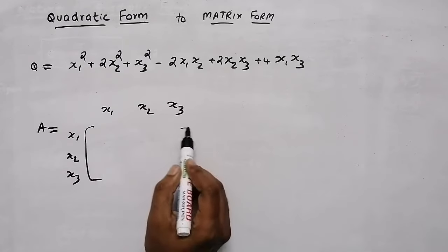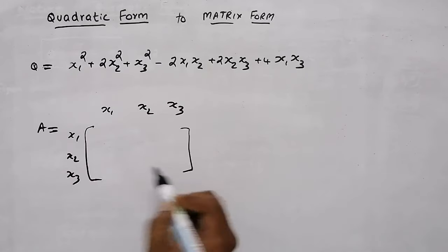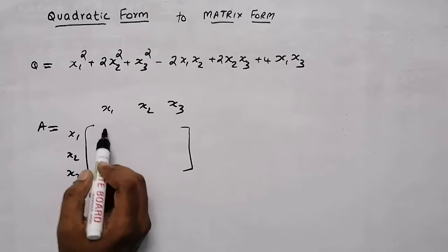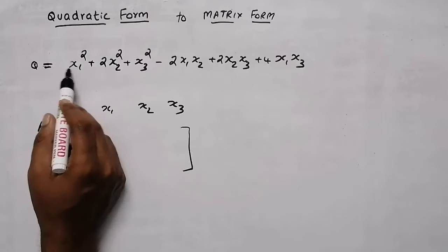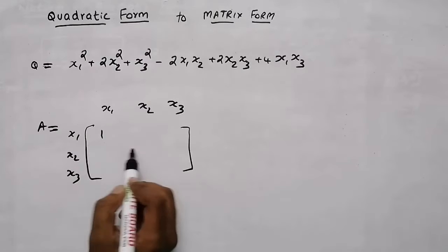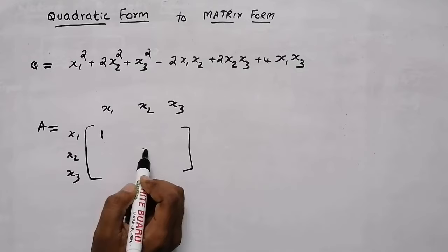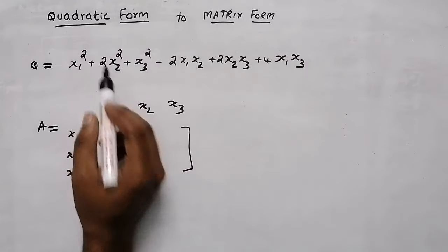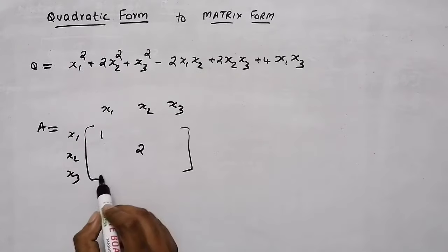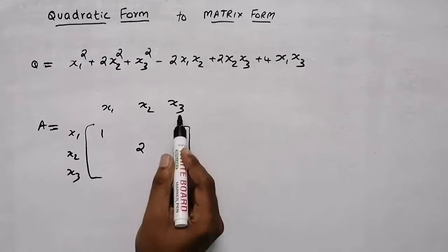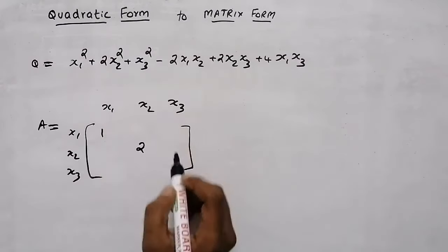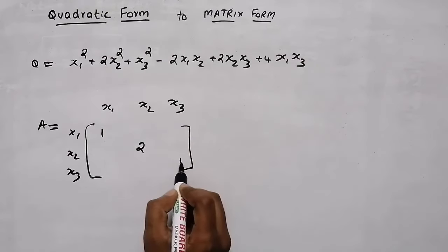First of all, we need to write the diagonal elements. x1 into x1, that is x1 squared — the coefficient of x1 squared is 1. Then x2 into x2, that is x2 squared — the coefficient of x2 squared is 2. Now, x3 into x3, that is x3 squared — the coefficient of x3 squared is 1.